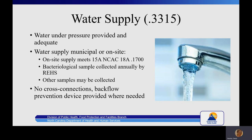Rule 3315, water supply: running water under pressure must be provided in sufficient quantities to meet all the needs of the facility and must maintain the pressure required by the North Carolina plumbing code — violation of number 16. The water supply shall meet the requirements of either 18C rules or the 18A 1700 rules. A sample shall be collected by the EHS and submitted to a state-certified laboratory for bacteriological analysis — violation of number 16. No cross-connections with an unapproved water supply shall exist; if potential backflow conditions exist, an approved backflow prevention device shall be provided — violation of number 18.